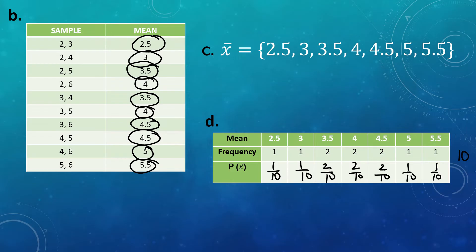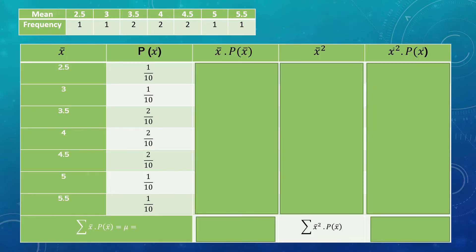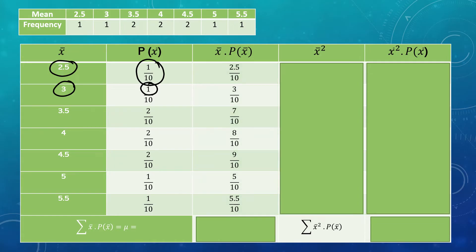Now we construct the table. We copy the x̄ and P(x̄) columns. To find x̄·P(x̄), we multiply each x̄ by its probability. So 2.5 × (1/10) = 2.5/10. Then 3 × (1/10) = 3/10. Then 3.5 × (2/10): multiply 3.5 by the numerator 2 to get 7/10. Then 4 × 2 = 8/10. Then 4.5 × 2 = 9/10. Then 5 × (1/10) = 5/10. And 5.5 × (1/10) = 5.5/10.